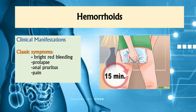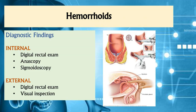To diagnose hemorrhoids, the following procedures are performed to visualize and assess their presence. For internal hemorrhoids, we use the digital rectal exam (DRE), anoscopy, and sigmoidoscopy. For external hemorrhoids, the DRE along with a simple visual inspection is sufficient.